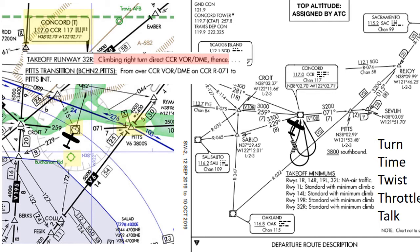The SID is not to scale, but we can expect to probably reach 3,000 before we get to CCR. When we get to 3,000, the five T's are: turn — we don't need to because we're still on the way to the VOR; time — we don't need that either; twist — we perform the level off; and talk — we only need to talk if they told us to report at 3,000, which is not normally required.